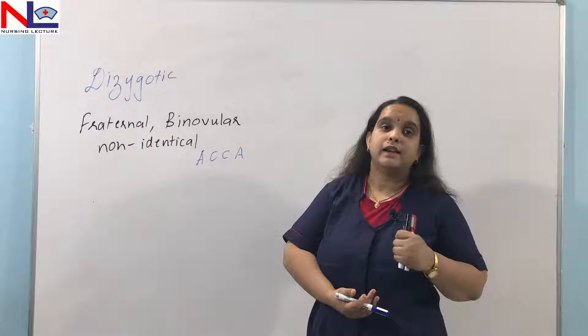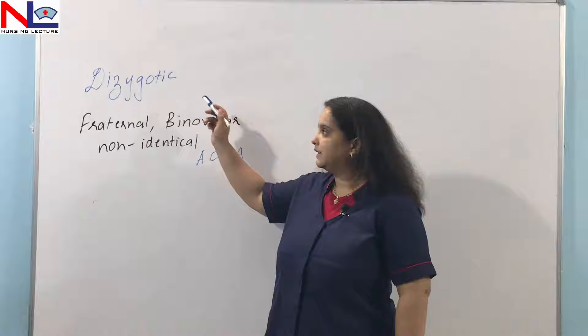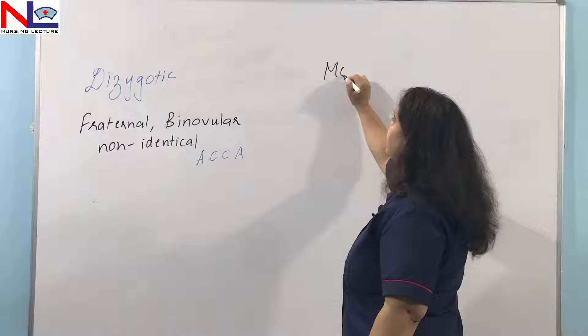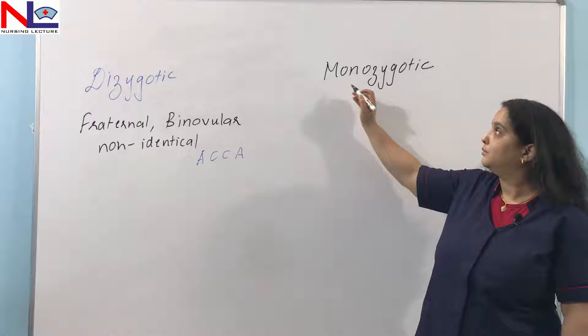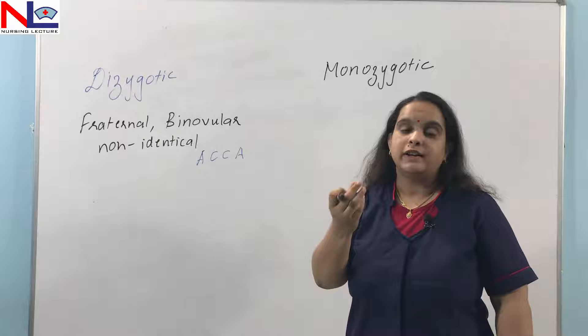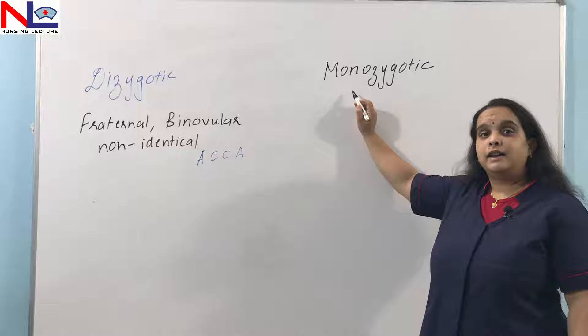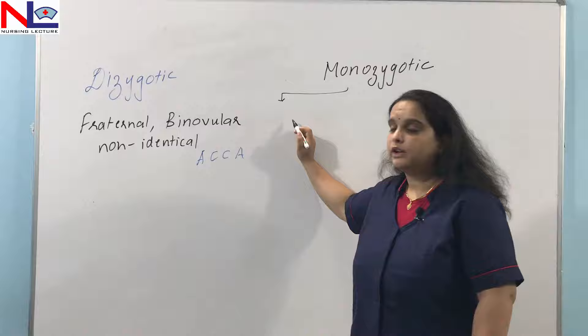In dizygotic twins the sex may be the same or different, but in monozygotic twins the sex is always the same. Dizygotic is the more common variety in multiple pregnancy. The second variety is the monozygotic twin, where — as the name suggests — there is only one ovum that comes in contact with a sperm to become fertilized.